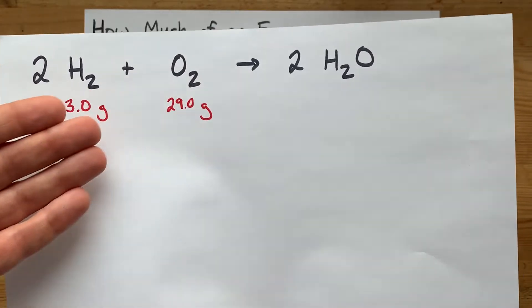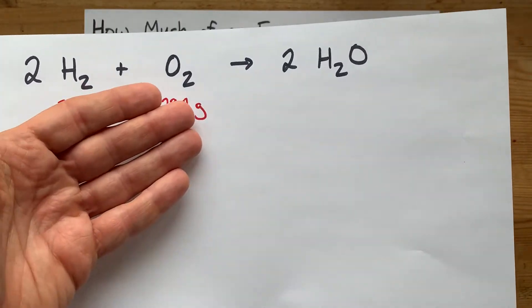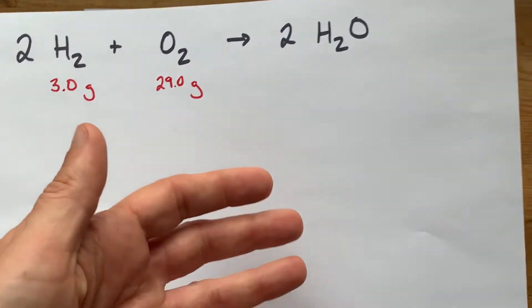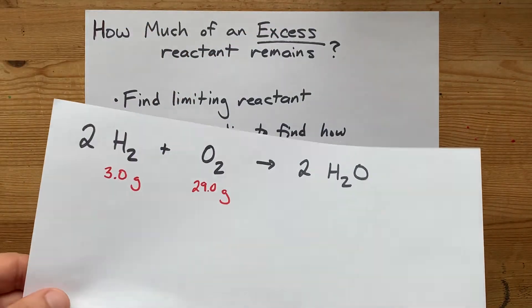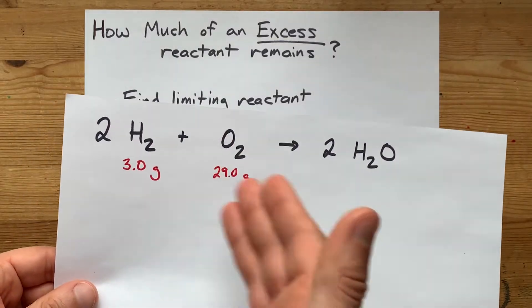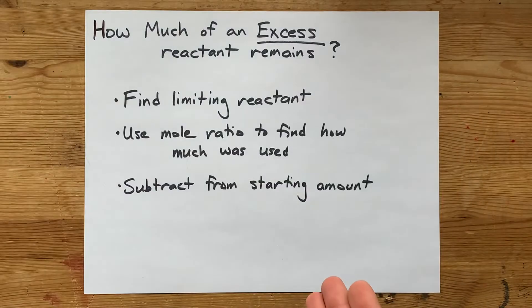Once there's none of one of these, then the rest of the other thing is going to just sit there and have nothing to react with. It's called the excess reactant. How can you figure out how much of it is left over at the end of a reaction?